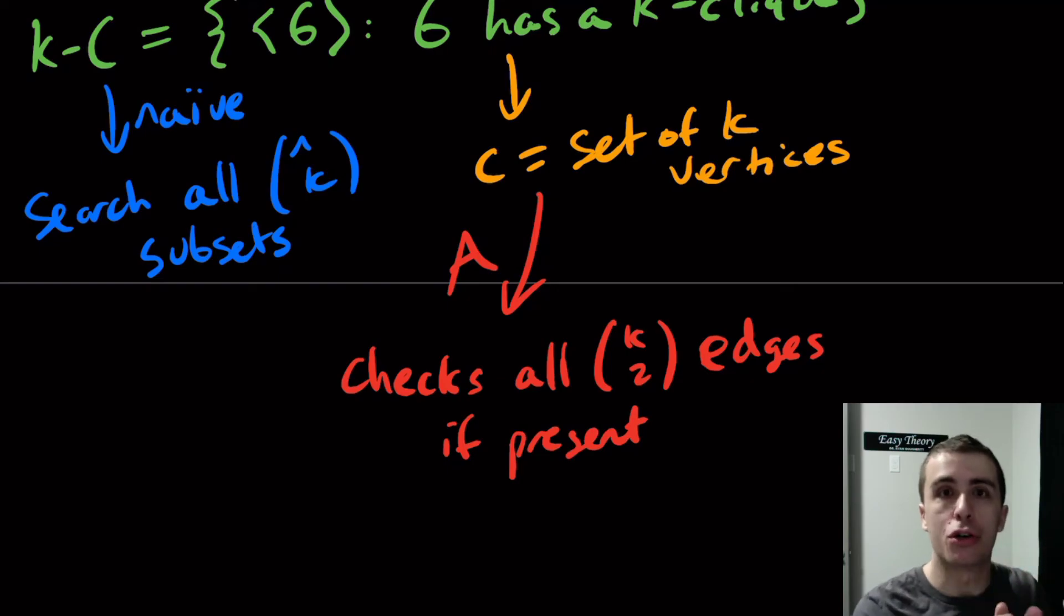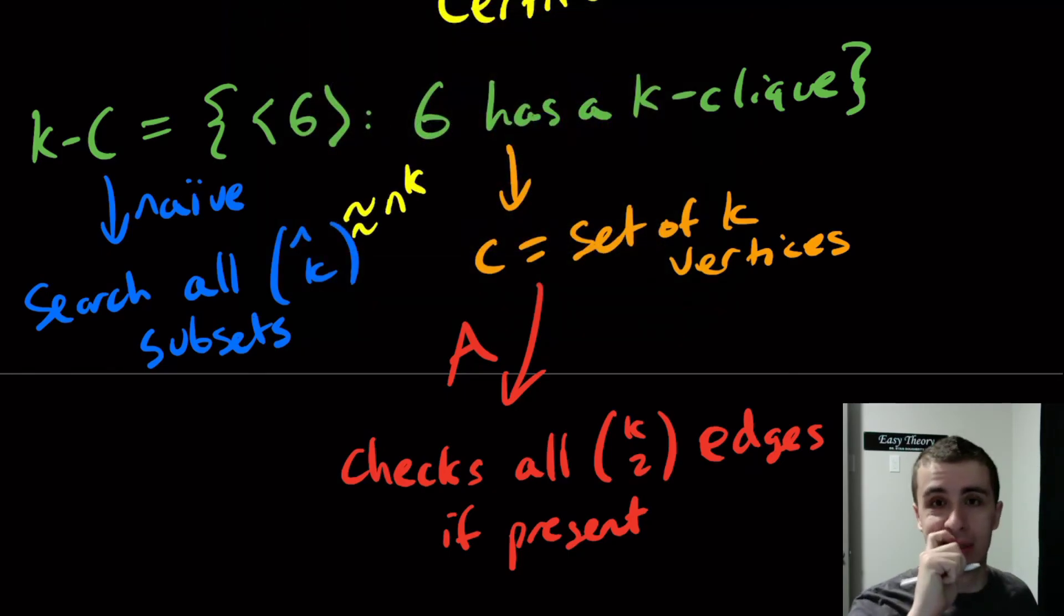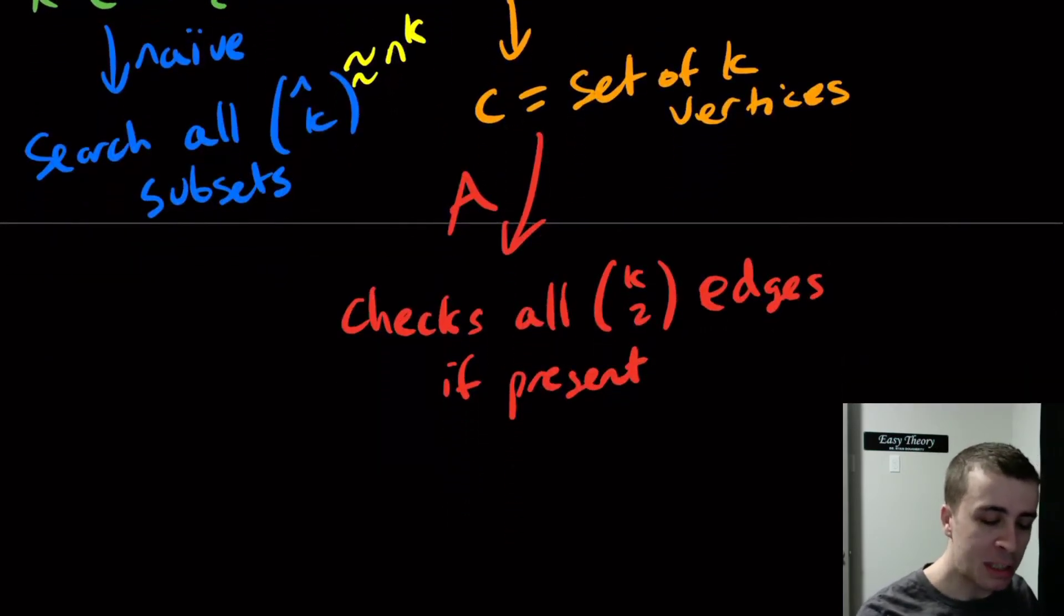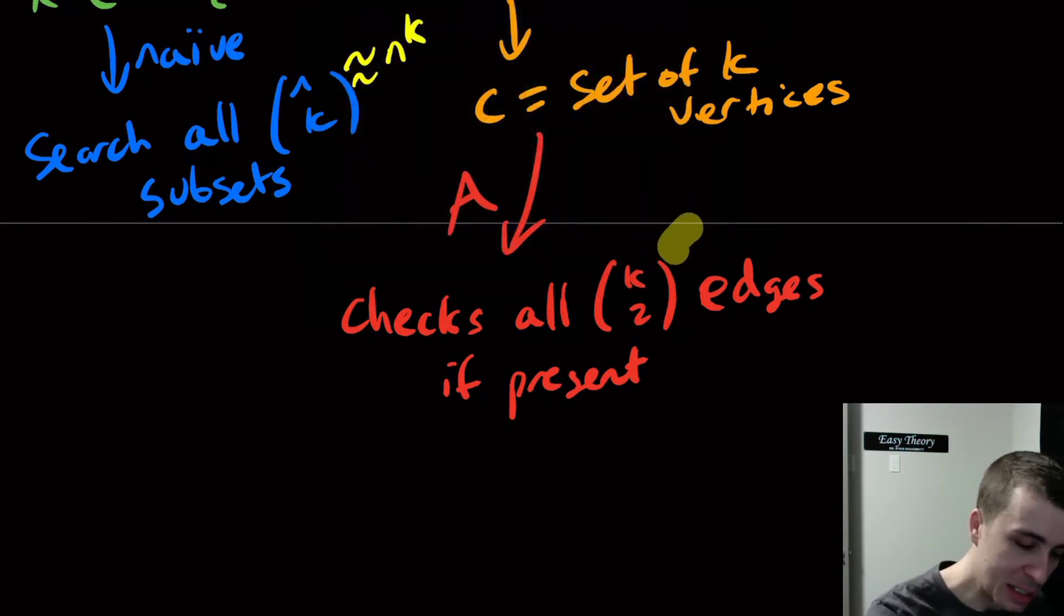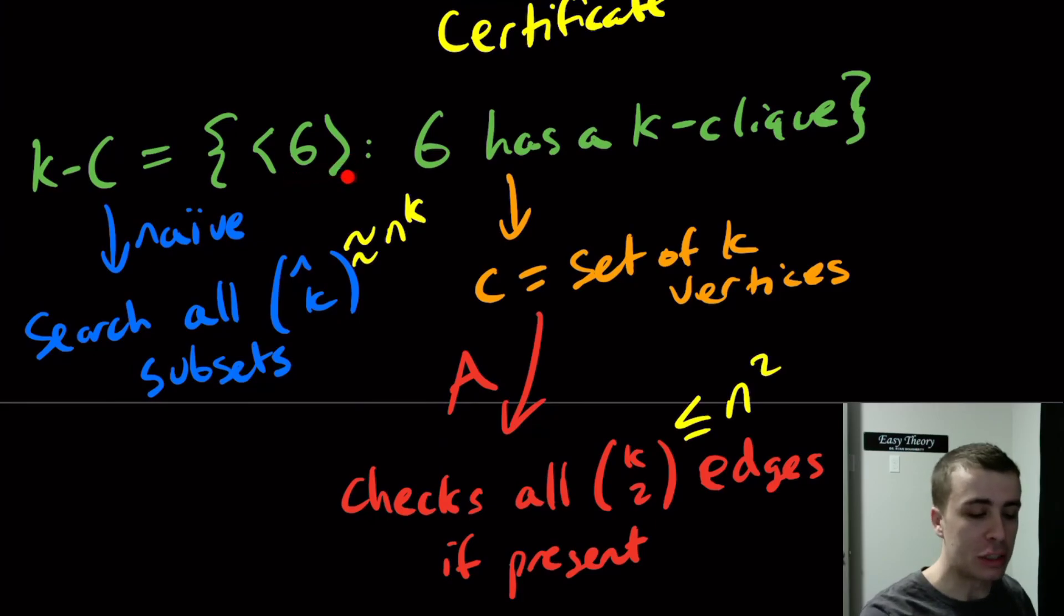This n to the k is roughly n to the k work. If k can go off to infinity or be a very large number, then this can be a lot of work to do, whereas k is at most n because at most you can have an n-clique where there are n vertices. This thing is at most n squared work. If k becomes a thousand, that is a lot more work than n squared. So if we have a certificate C or can produce one in some way, then that makes the checking of this a lot easier. We can determine whether G has a k-clique really quickly because we can just have the certificate tell us, oh yeah, search right here and then verify it for that subset.